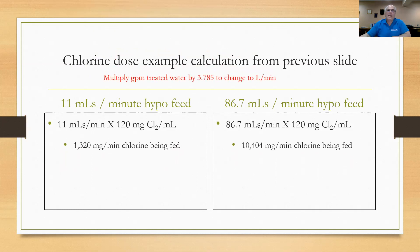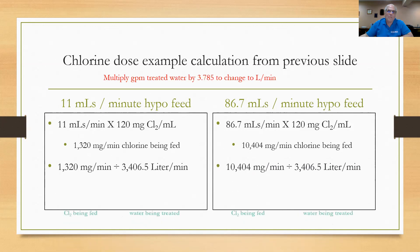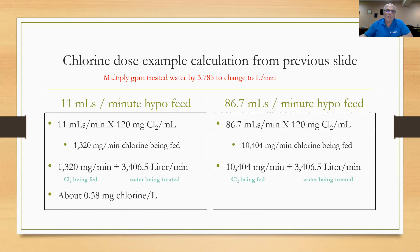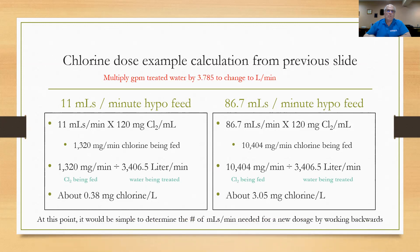Multiply the gallons per minute of water treated by 3.785 to convert to liters per minute. We had 900 GPM being treated, which equals 3,406 liters per minute. Dividing: 1,320 mg/min by 3,406 L/min gives about 0.3 mg/L chlorine on the pre side, and 10,404 mg/min by 3,406 L/min gives about 3 mg/L on the post side. At this point it's easy to determine milliliters per minute needed for new doses. For example, if you want 0.7 mg/L on the pre side, take 0.7 times 3,406 and divide by 120 mg/mL to get the new mL/min feed rate needed.